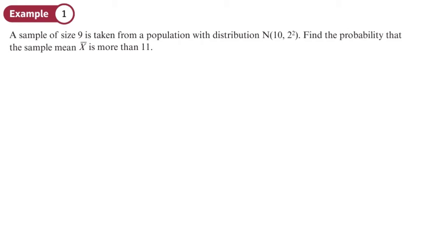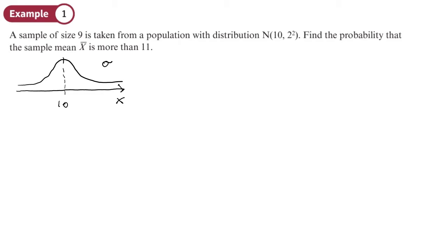A sample size of 9, which is quite small, is taken from a population with a given distribution. Find the probability that the sample mean is more than 11. Our population is normally distributed with a mean of 10 and a standard deviation of 2, so variance of 4.